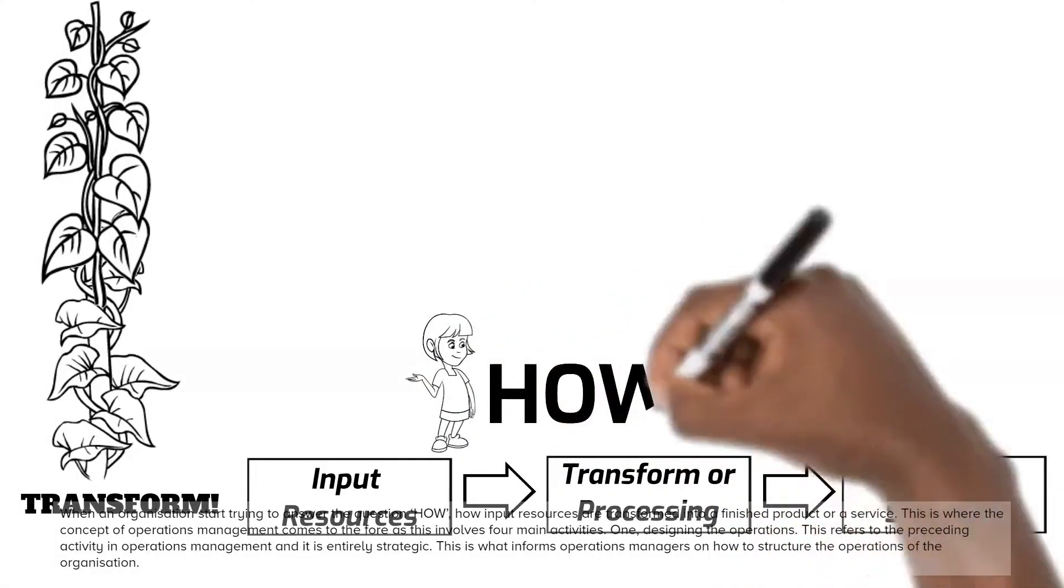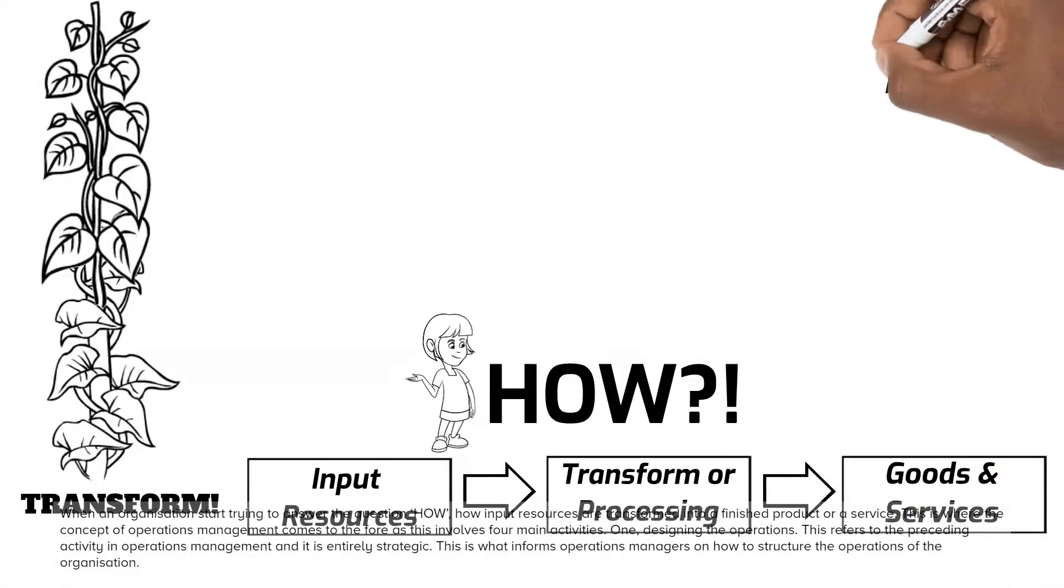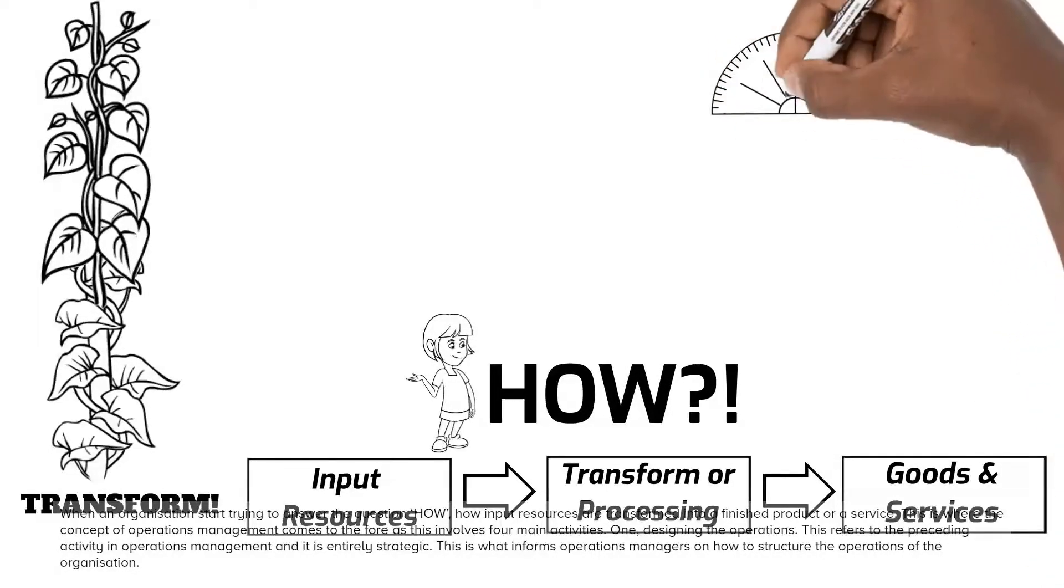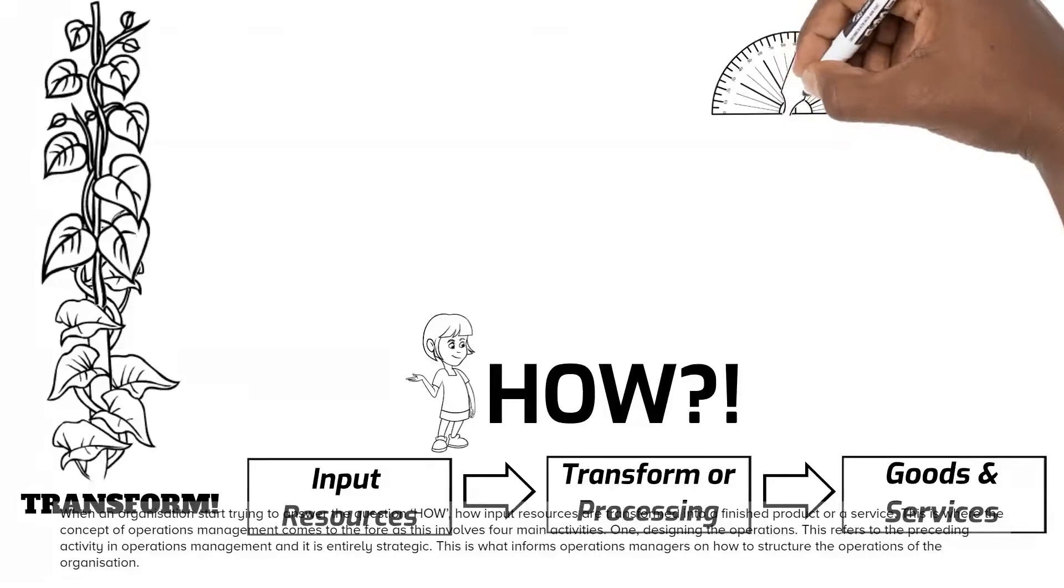This is where the concept of operations management comes to the fore as this involves four main activities. One, designing the operations. This refers to the preceding activity in operations management and it is entirely strategic. This is what informs operations managers on how to structure the operations of the organization.